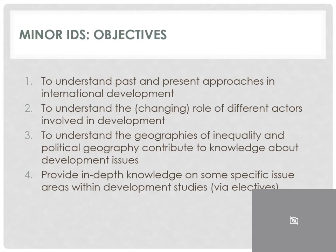There are several objectives that are cross-cutting throughout the minor in all the courses. These include: first, to understand past and present approaches in international development; second, to understand the changing role of different actors involved in development — ranging from new private sector actors to student activists and changing roles for governments; third, to understand how the geographies of inequality and political geography contribute to knowledge about development issues; and fourth, to provide in-depth knowledge on some specific issue areas within development studies, done both within the introductory course and in the electives.